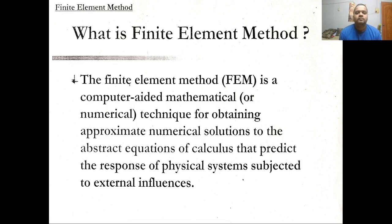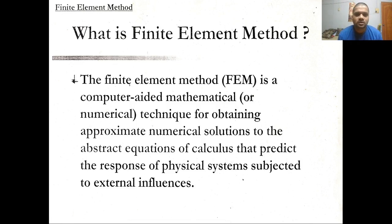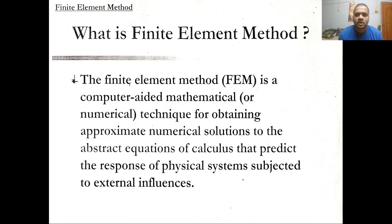The definition is quite simple — it is another method to calculate the response of a physical system. For example, if I have a beam being subjected to some axial force, the classical method gives us various formulas to find the deflection at certain points. But if we want to find the deflection of the entire beam as a whole, we would have to use those formulas a very large number of times. The classical method allows us to find deflection at a specific point.